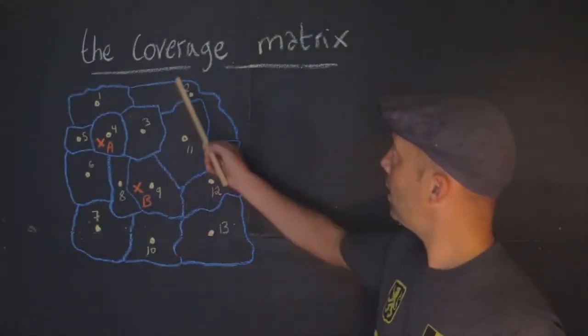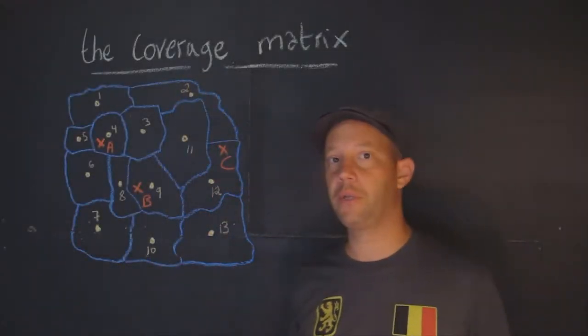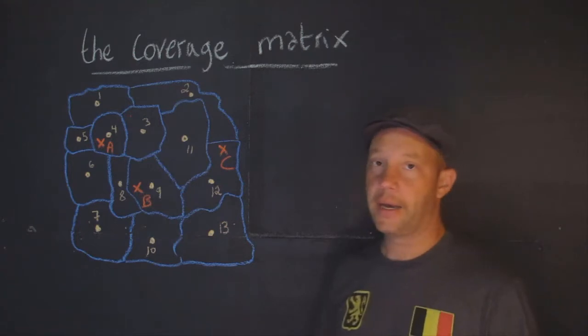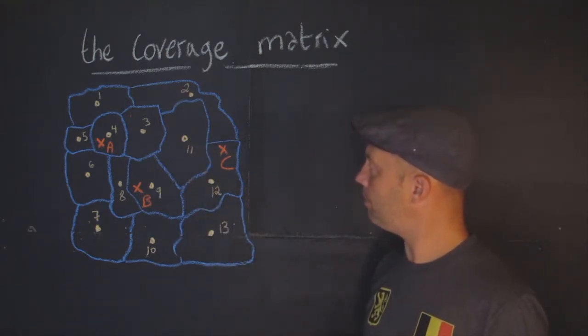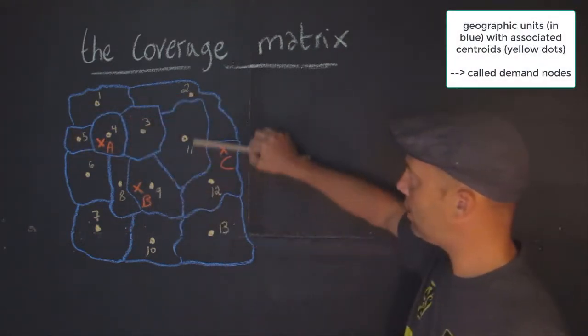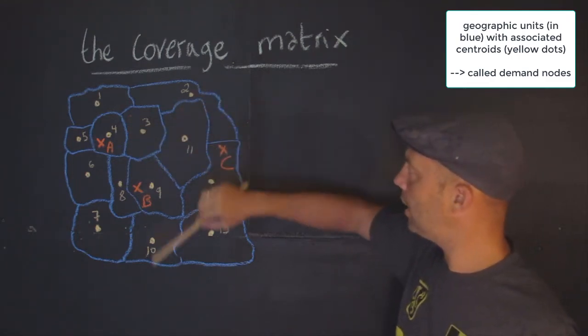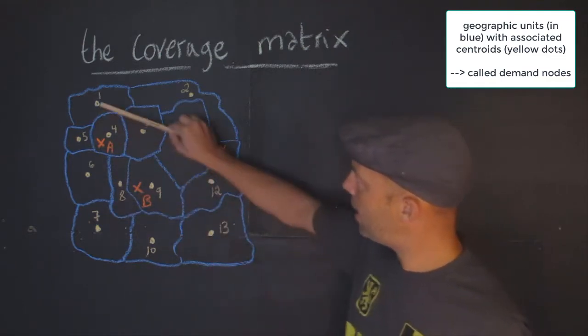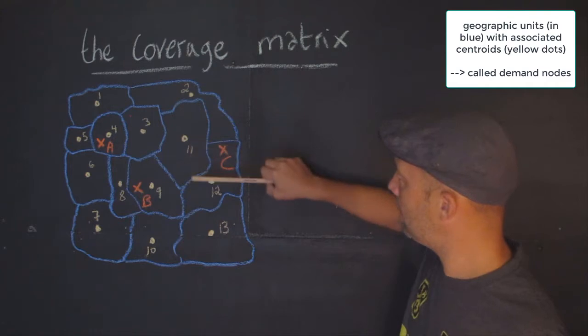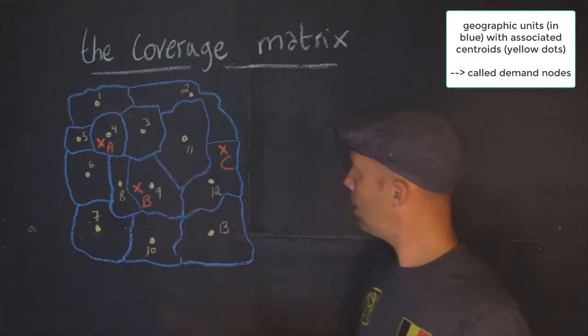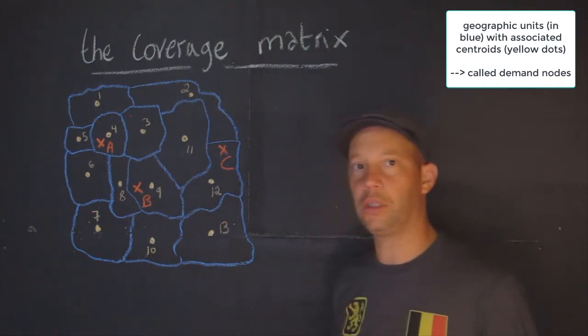The coverage matrix is an important ingredient of all these covering models. To explain what I mean by coverage matrix, I have drawn a small example here. You can recognize some geographic units, census tracts maybe or zip codes, and those are in blue here. Those are the polygons. For each of them I have computed the centroid, the center of gravity, and they go from 1 all the way to 30. Those are what I would call demand nodes.